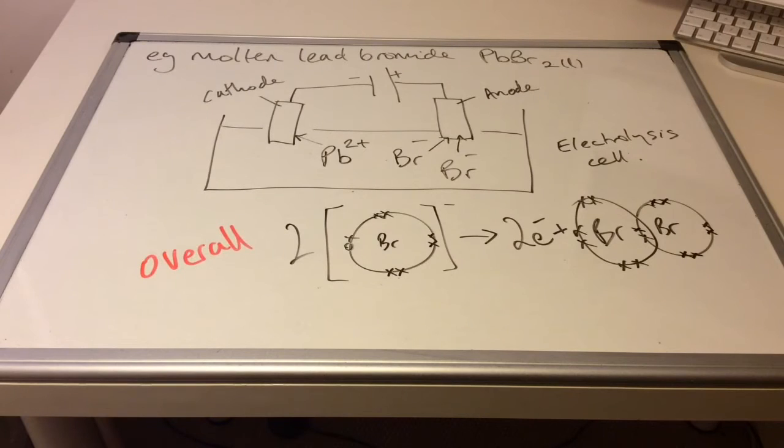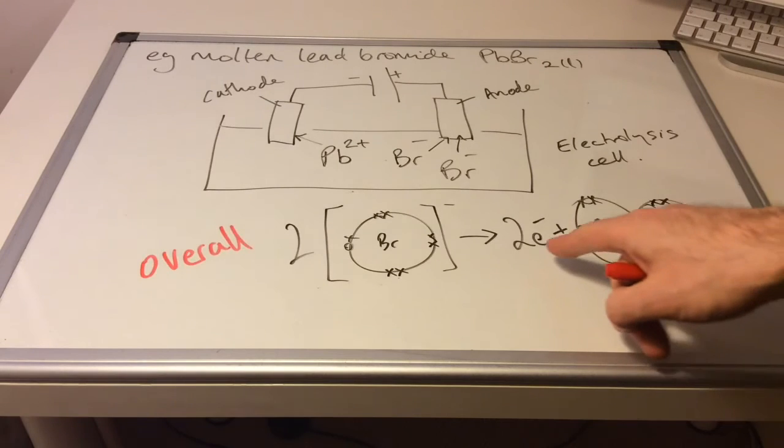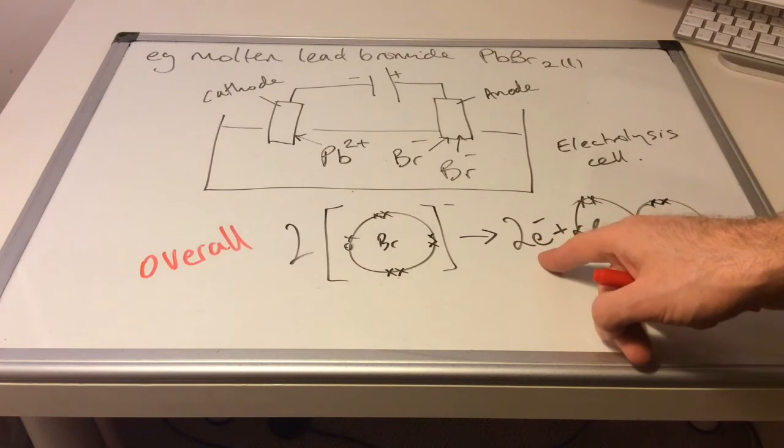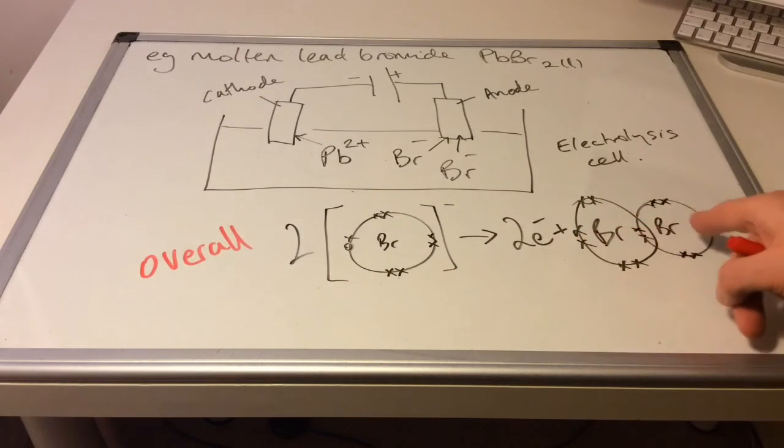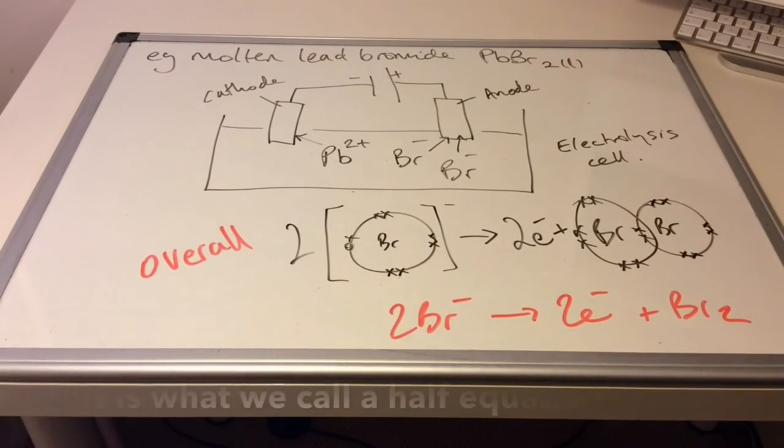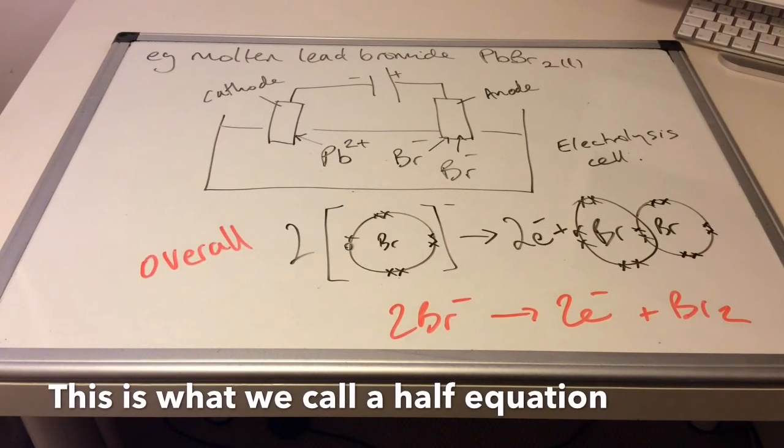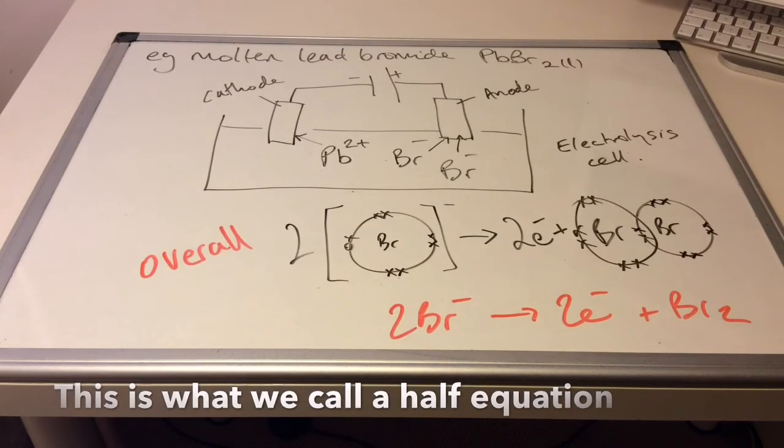So overall, what's happened is two bromide ions have given up two electrons, one each. And the two individual bromine atoms have combined to form the covalently bonded bromine molecule. And there it is written up as a regular equation without all the dots and crosses.